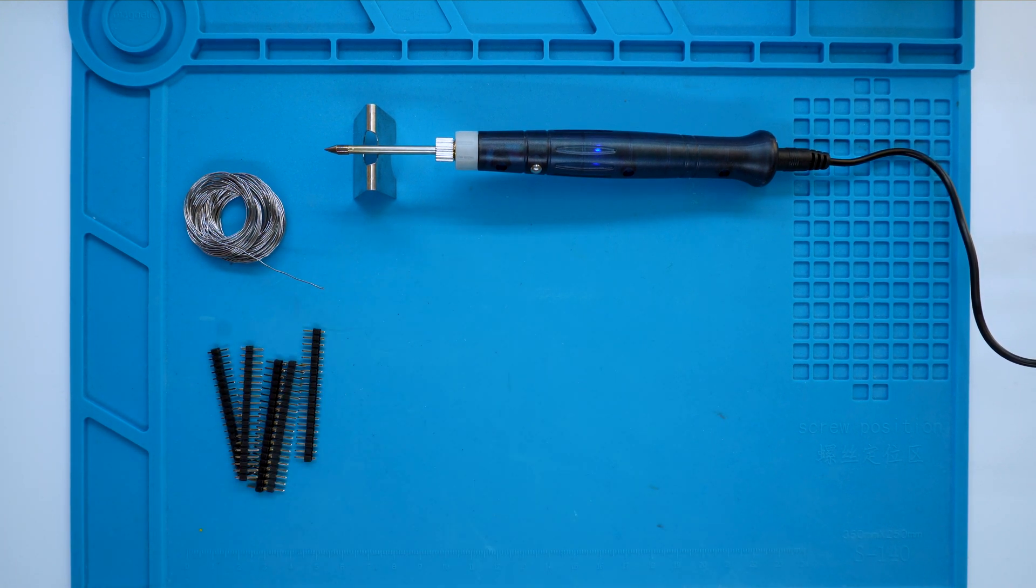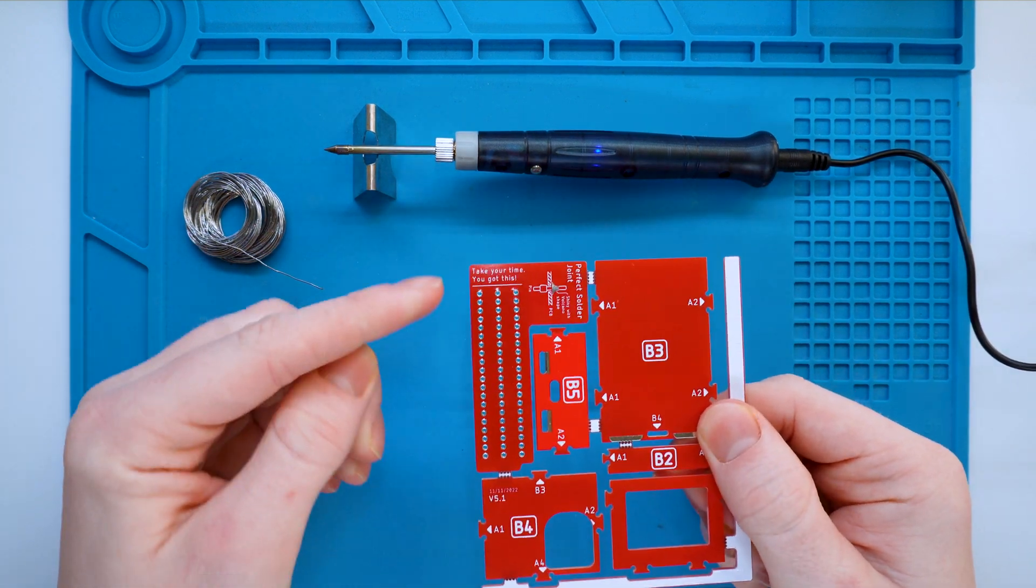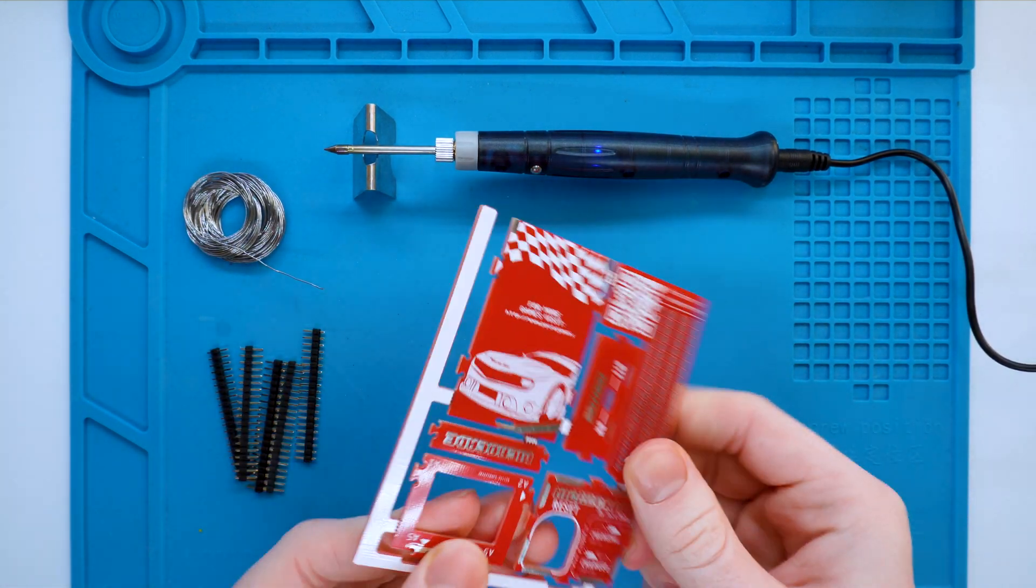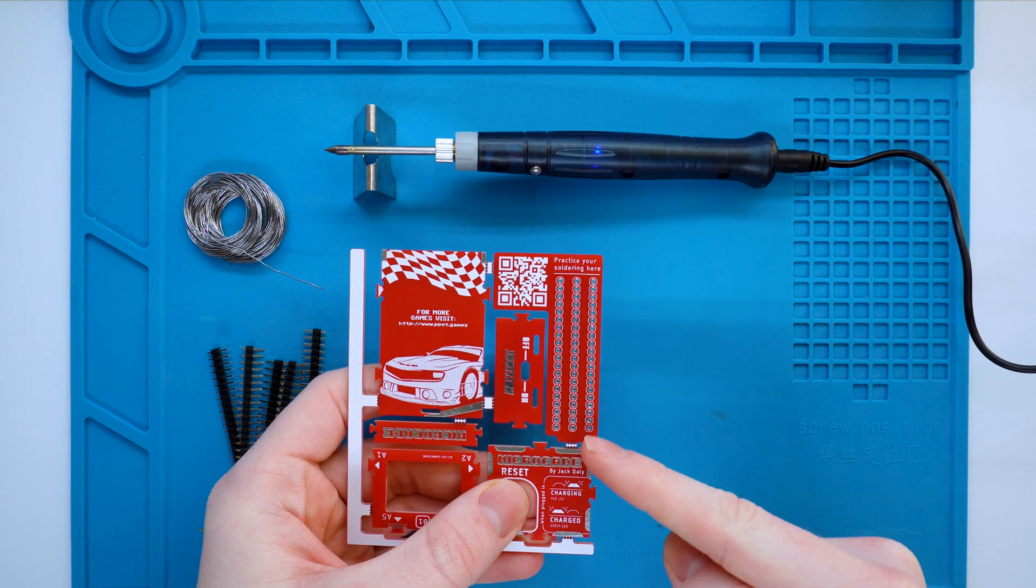Here we've got our solder, we've got all the header pins, and we've got the second panel in which we've got the practice soldering board that we're going to go ahead and snap off.